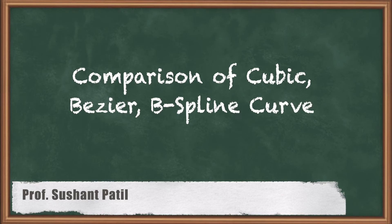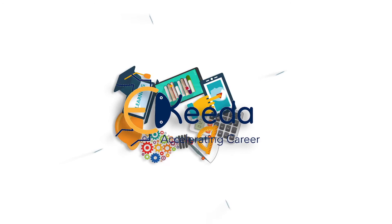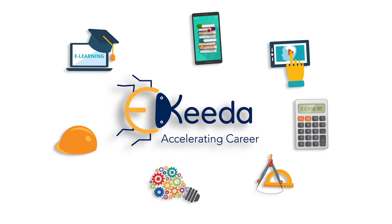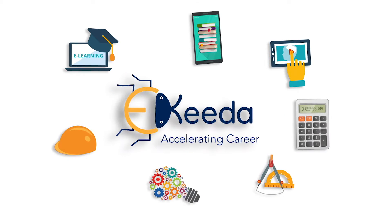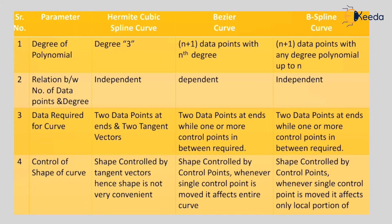Hello friends, let's begin with comparison of cubic Bezier and B-spline curves. If you observe, there are four parameters on the basis of which Hermite cubic spline, Bezier, and B-spline curves are differentiated.